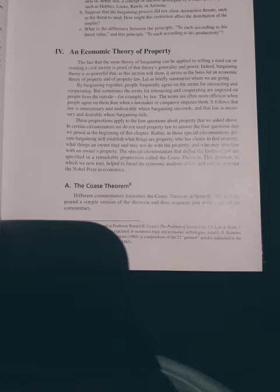These propositions apply to the four questions about property that we asked above. In certain circumstances, we do not need property law to answer the four questions that we posed at the beginning of the chapter. Rather, in those special circumstances, private bargaining will establish what things are property, who has claims to that property, what things an owner may and may not do with the property, and who may interfere with an owner's property. The special circumstances that define the limits of law are specified in a remarkable proposition called the Coase Theorem.